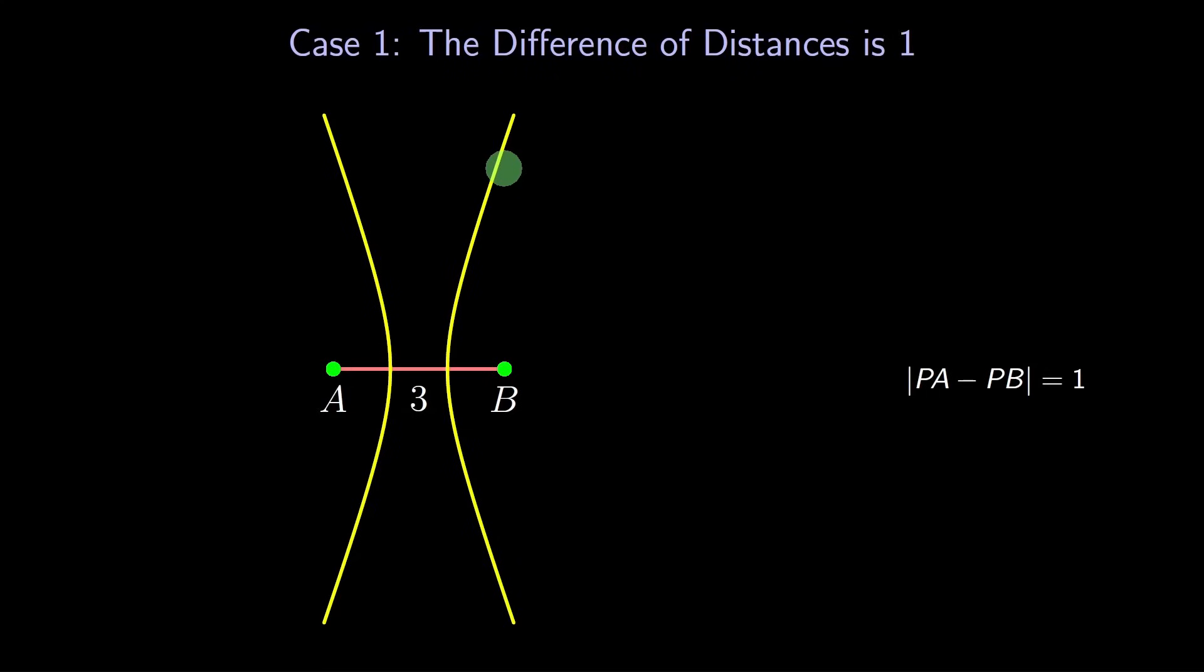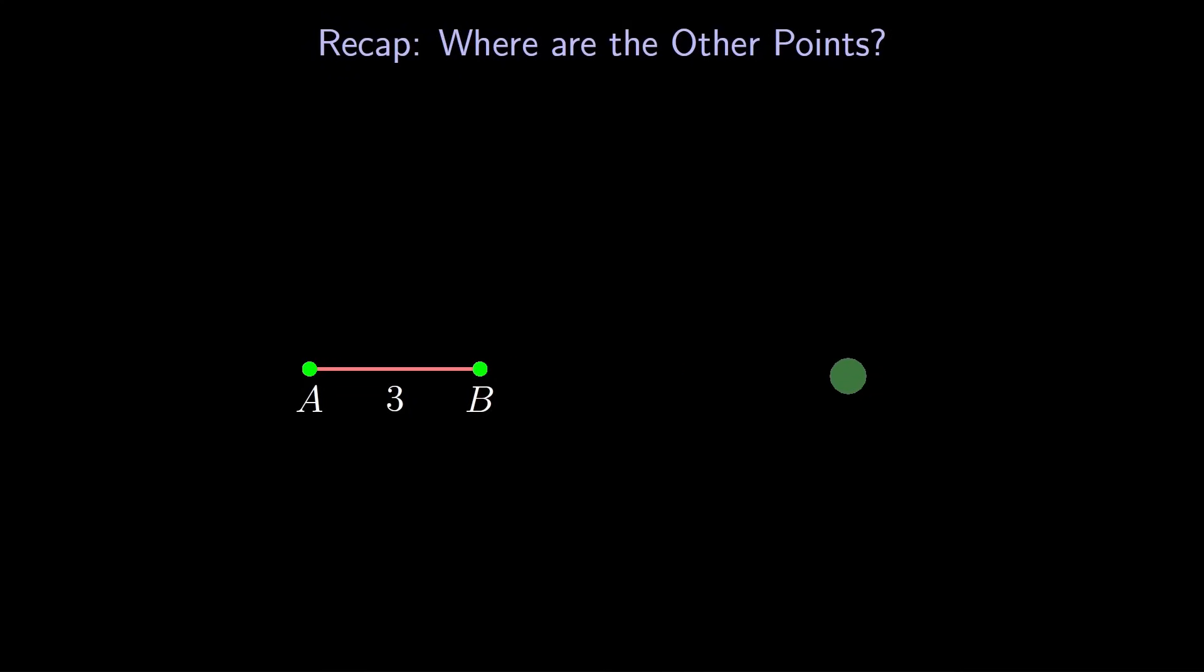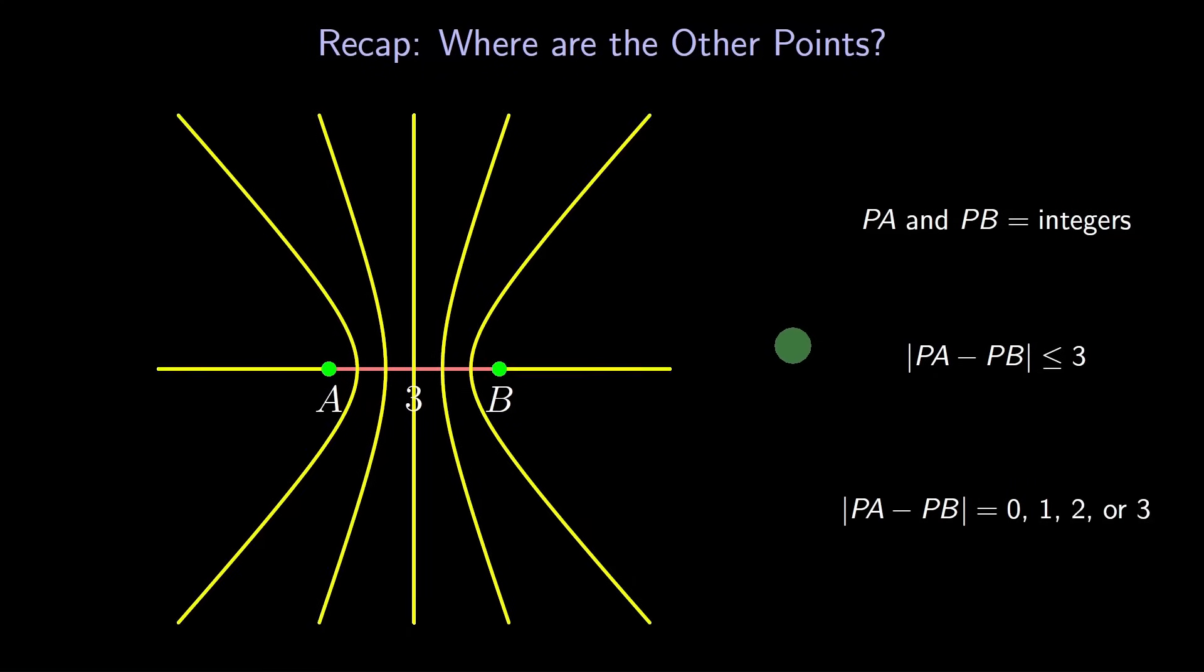Finally, the last case. The difference between the lengths PA and PB is 3. It's this pair of rays, heading to infinity in both directions. Let's put all these cases together. We have a line, two hyperbolas, and a pair of rays. We'll think of the line as a degenerate hyperbola. We'll think of the pair of rays as a degenerate hyperbola also. So we have four hyperbolas, two of which are degenerate. We've made good progress. At first, all we knew about the points in our set was that they were somewhere in the plane, the two-dimensional plane. But now we know that our points are on the four yellow hyperbolas, a one-dimensional set.